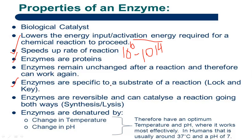Enzymes are specific to the substrate — this is also very important. They follow the lock-and-key mechanism, which we will talk about later. They are very specific according to their shape and function, and which type of substrate attaches to the enzyme is specific according to its structure. Enzymes are also reversible and can catalyze a reaction going both ways — they can perform both catabolism and anabolism, meaning they can synthesize reactions as well as break up products.